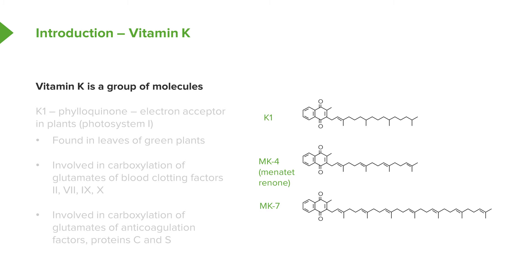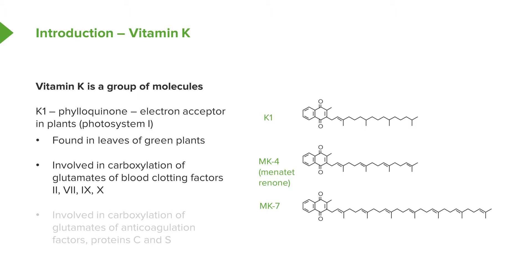Vitamin K is actually a group of molecules. The form known as vitamin K1 is also known as phyloquinone. It's an electron acceptor found in plants in the photosynthesis system known as photosystem 1. It's found in green leaves, and because of the chlorophyll that plants have, this compound is quite abundant. Vitamin K is involved in the carboxylation — that is, adding a carboxyl group — to the glutamate side chains of the blood clotting factors. This includes blood clotting factors 2, 7, 9, and 10. Vitamin K can also be involved in the carboxylation of anticoagulation factors, including the glutamate side chains of protein C and S, as well as some bone proteins.